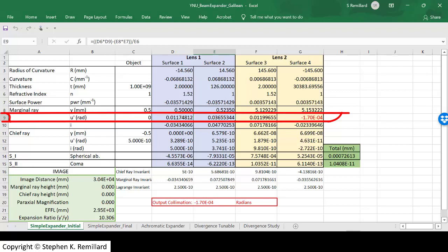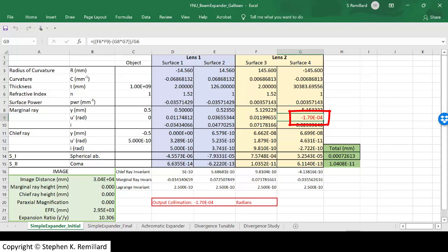The incident angle of the chief ray is used to calculate the chief ray invariance that we can calculate coma. The output angle at surface 4 of the marginal ray should be 0 if it's perfectly collimated. The output angle is minus 1.7 times 10 to the minus 4 radians. That is the output collimation.